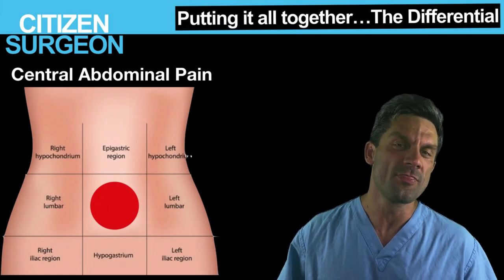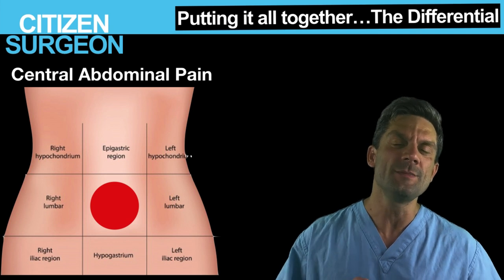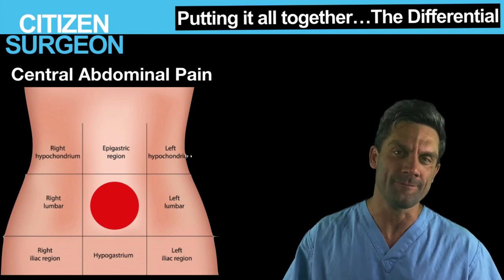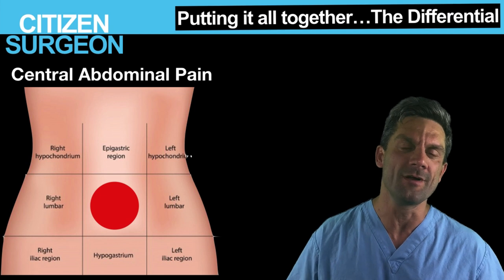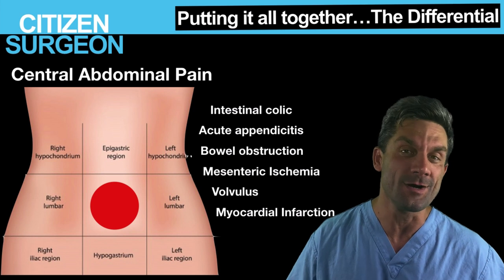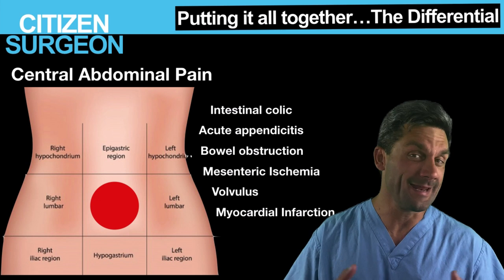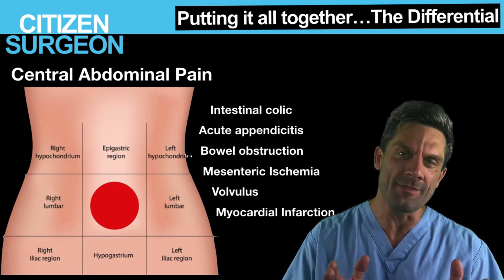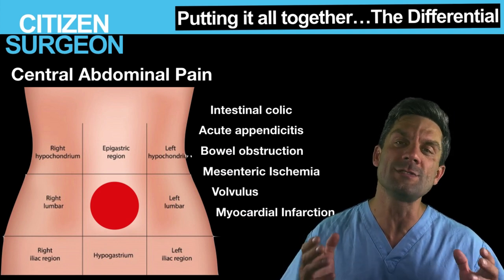Let's go through the different regions of the abdomen. If somebody comes in with central abdominal pain, this could be everything from intestinal colic to acute appendicitis, bowel obstruction, mesenteric ischemia, volvulus, or myocardial infarction — basically anything. You're really going to have to use your history and physical examination to try to dial this down. Central abdominal pain is the black box; it could be almost anything in the abdomen.